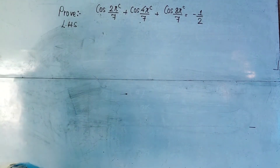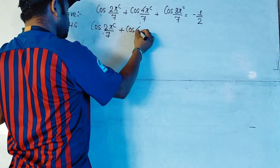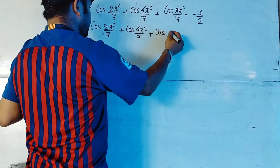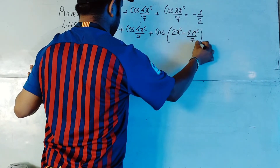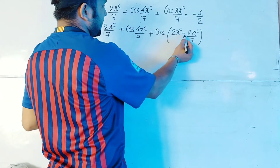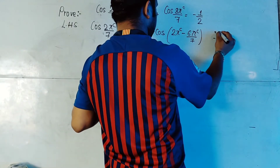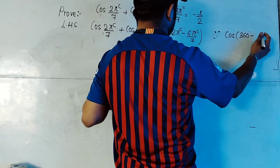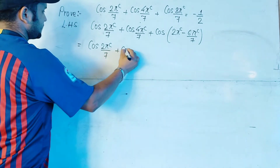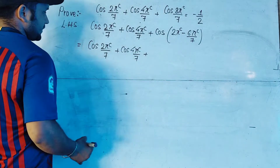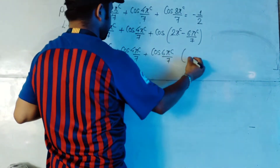We'll start the problem from the left hand side. On the left hand side we have cos(2π/7) + cos(4π/7) + cos(8π/7). In place of cos(8π/7) we can write cos(2π - 6π/7), because 8π/7 is equivalent to 2π - 6π/7 (since 14 - 6 = 8). We also need to know that cos(360° - θ) = cosθ. So now we can rewrite: cos(2π/7) + cos(4π/7) + cos(6π/7).